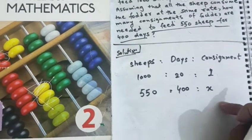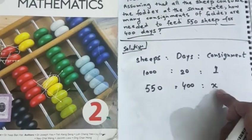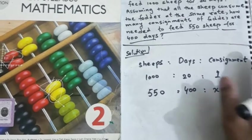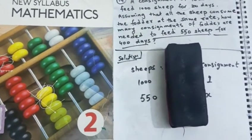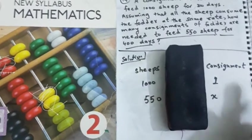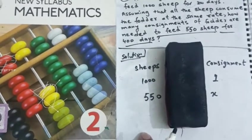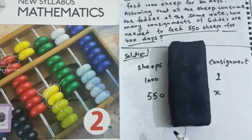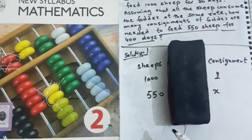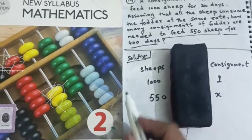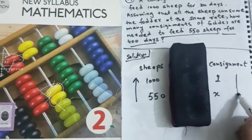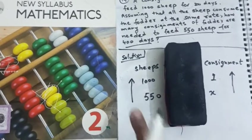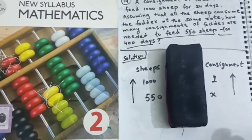You know, consignment area, one thing is unknown. X is unknown. So, I shall compare consignment with the sheep, then I shall compare consignment with the days. During this, I shall hide the number of days. Now, you can see consignment is visible and the sheeps are visible. You know, when the sheeps are increasing, of course, the consignment should be increased. That means the relationship is direct. So, both of the arrows should be in the same direction. When the sheeps are increased, the consignment is also increased.